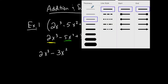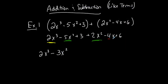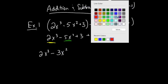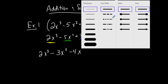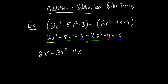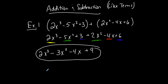The next piece is the first-degree term. There's nobody to combine it with, so it comes down by itself: negative 4x. Then last but not least, I have two constant terms — a positive 3 and a positive 6 — and they combine into a plus 9. Here is my final sum. No like terms left to combine. It is in standard form, which is what I want. It's a third-degree polynomial with 4 terms: three variable terms and one constant term. This is the sum of these two trinomials.